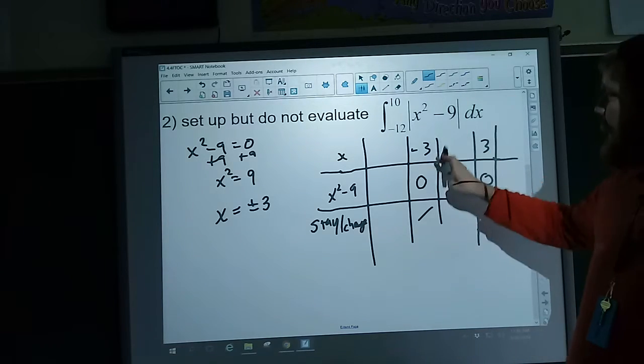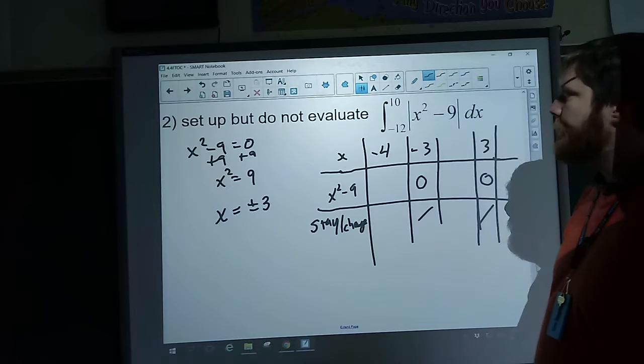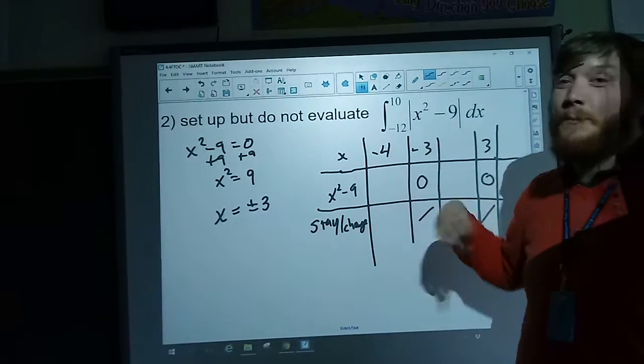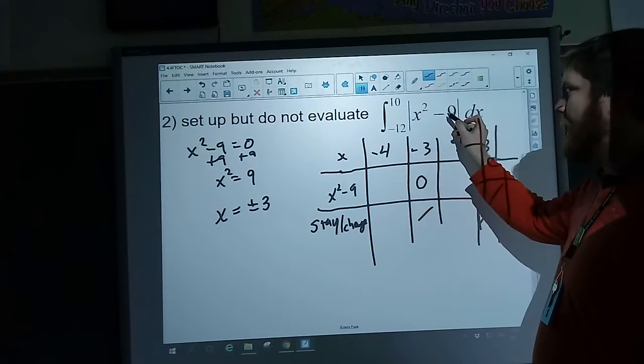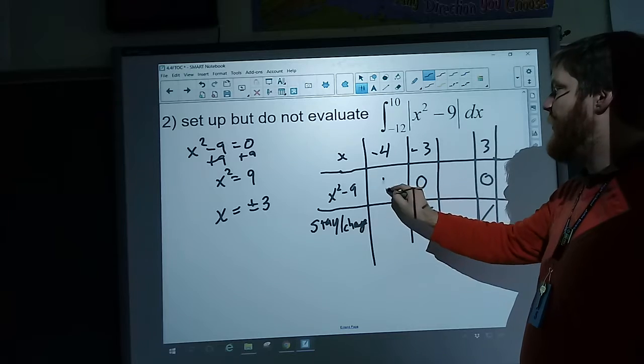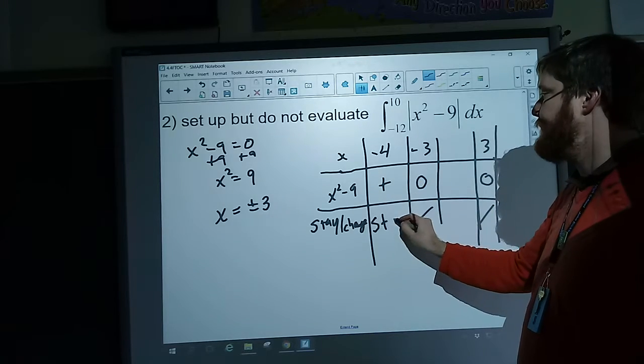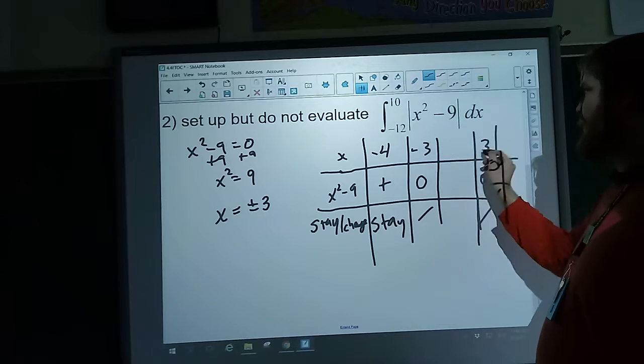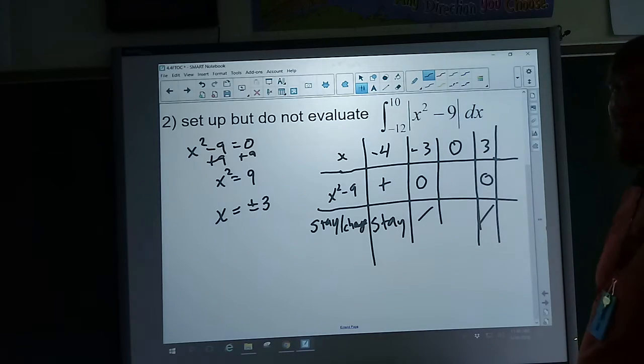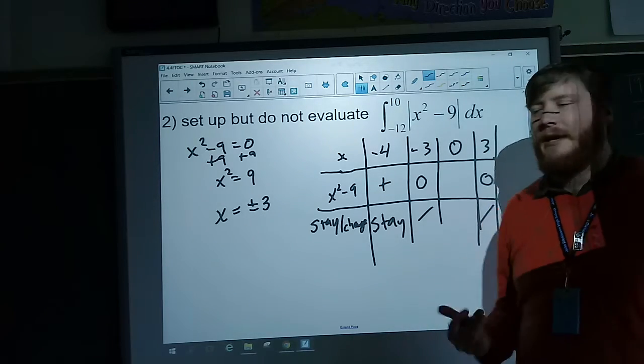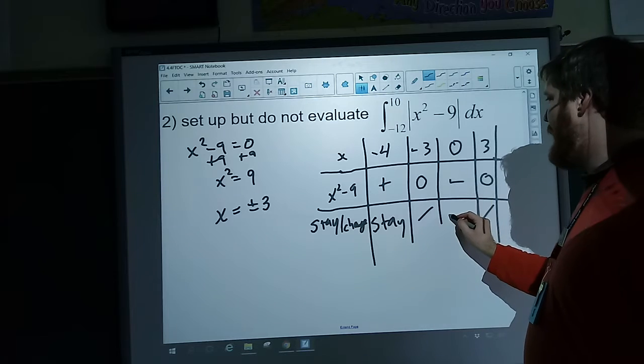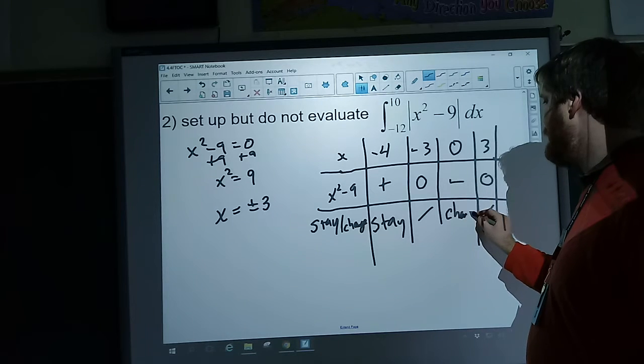If I try plugging in something to the left of negative three, such as negative four - let's see, negative four squared, that's a positive 16 minus nine. It's a positive value, so I stay. Let's plug in something in the middle. I'm going to plug in zero because zero is easy. It's the absolute value of negative nine then. Oh, that's negative, so I change or flip.